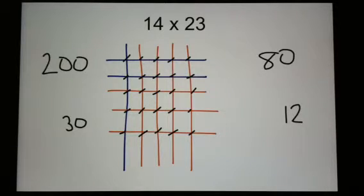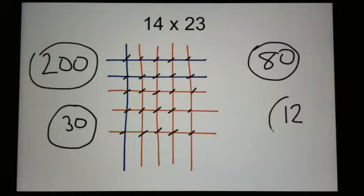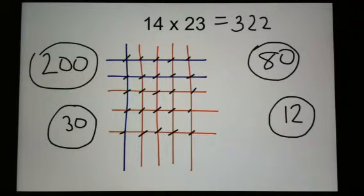So if I add everything up, 200 plus 80 is 280. 280 plus 30 is 310. 310 plus 12 is 322. So the answer to 14 times 23 is 322.